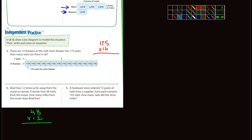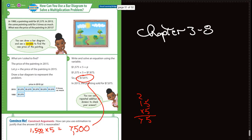Number five, a hardware store ordered 13 packs of nails from a supplier. Each pack contains 155 nails. I can see where this is going. How many nails did the store order? So 155 times 13.